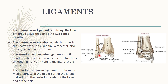Then there is the inferior transverse ligament. Remember that this inferior transverse ligament also forms a socket for the ankle joint. It runs from the medial surface of the upper part of the lateral malleolus — seen here — to the posterior border of the lower end of the tibia.